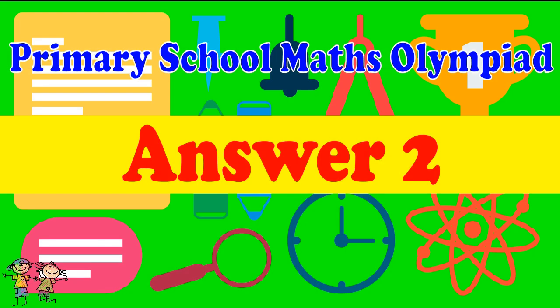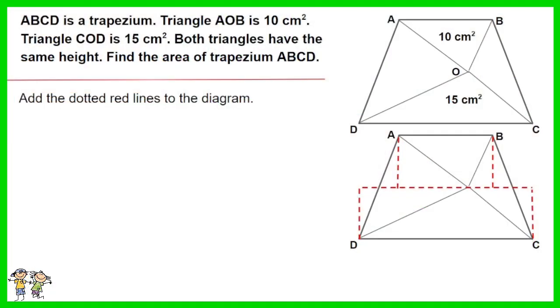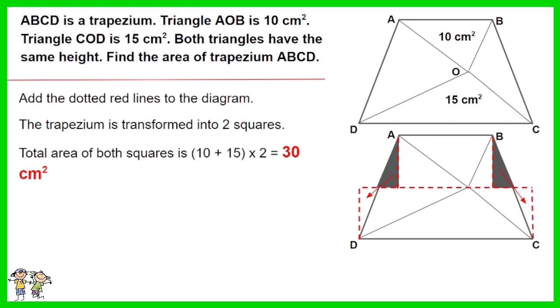Answer for question 2: Add the dotted red lines to the diagram. The trapezium is transformed into two squares. Total area of both squares is 10 plus 15 then times 2. The answer is 30 centimeters squared.